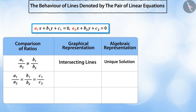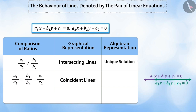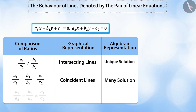If the ratio of the coefficients of x, the ratio of the coefficients of y, and the ratio of the constant terms are all equal, then the lines are called coincident. In this case, there are infinite solutions for the pair of linear equations.